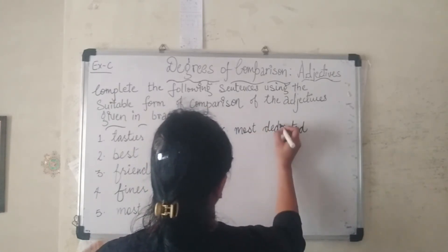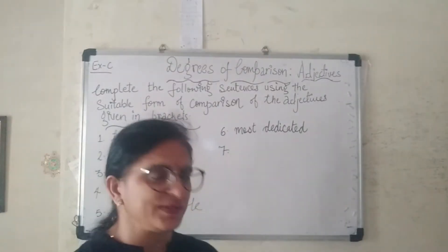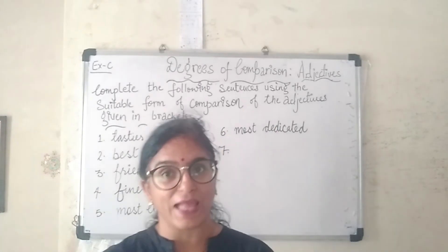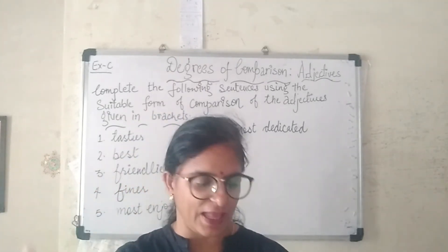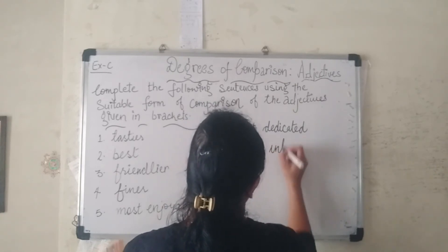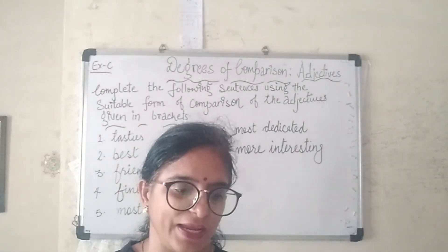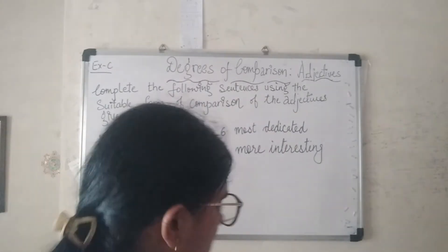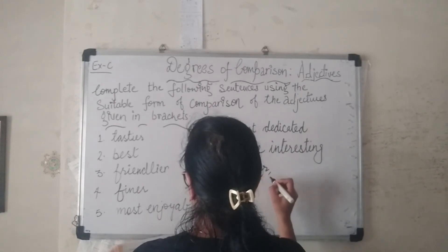Sentence 7: 'Ranjeet finds Hollywood films ___ than Bollywood films.' The adjective is 'interesting' — since 'than' is present, the answer is 'more interesting'. Sentence 8: 'In summer, the days are ___ and the nights ___.' The adjectives are 'long' and 'short' — the answers are 'longer' and 'shorter'.